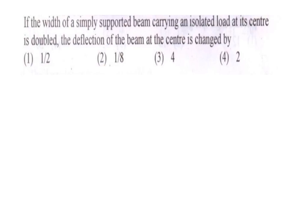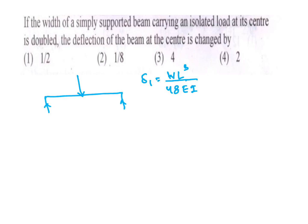Next question: if the width of a simply supported beam carrying an isolated load at its center is doubled, how is the deflection at the center changed? Initial deflection delta_1 = wL^3 / (48EI). Here nothing is changed except I.